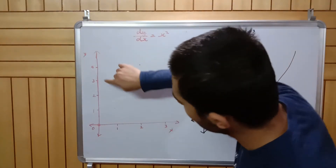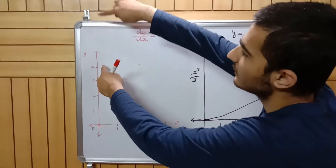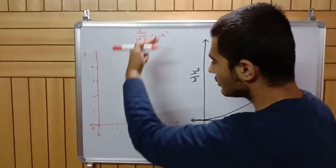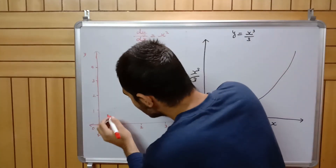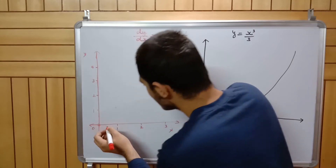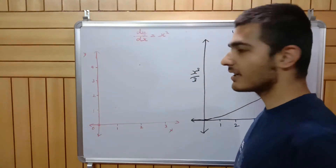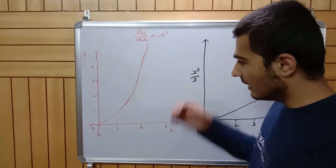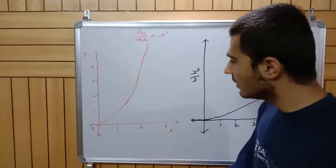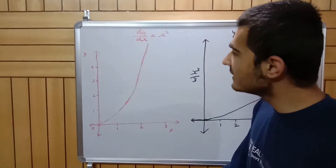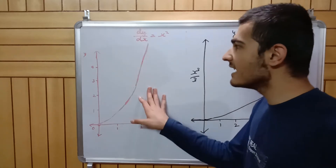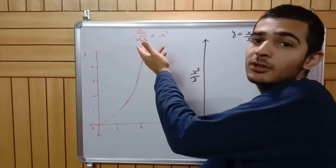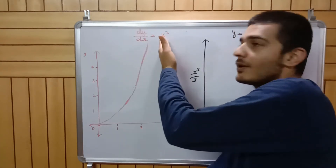The third point at x equals three with slope nine should be somewhere around double of four, so up around there. I draw a curve passing through all these plotted points. Looking at this curve, you can guess it looks like the curve of x squared — which is obvious because x squared is the derivative of x cubed by 3.